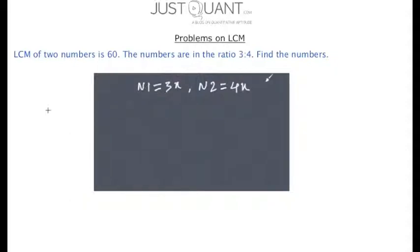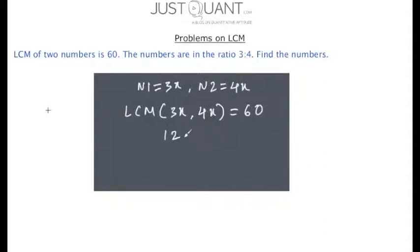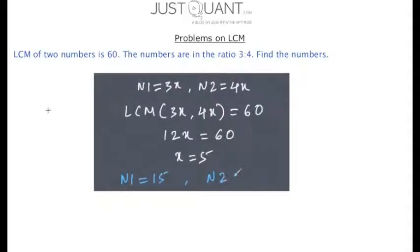We have the LCM of the two numbers is 60. Hence LCM of 3x and 4x will be equal to 60. Now the LCM of 3x and 4x is nothing but 12x. Hence we can write 12x = 60, which gives us x = 5. We thus have n1 = 3×5 = 15 and n2 = 4×5 = 20. Thus the two numbers are 15 and 20.